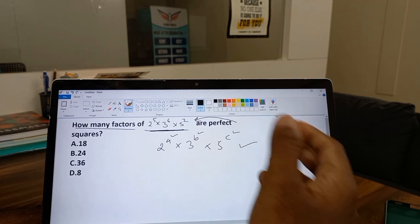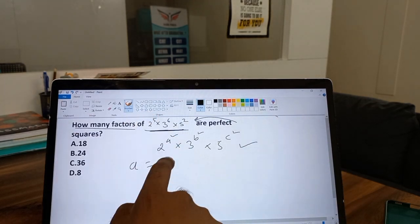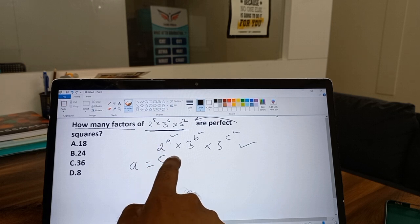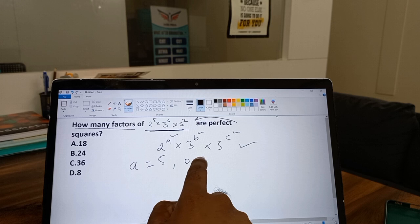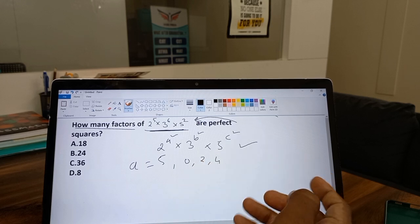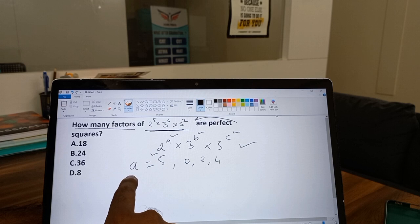Now how many possible values can a take out of this 5? a is equal to 5. Now up to 5, how many numbers we have as even numbers? That is, a can take 0, 2, or 4, because you have to take less than 5. The highest value for a is 5 only.